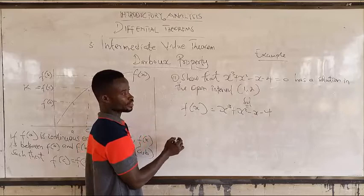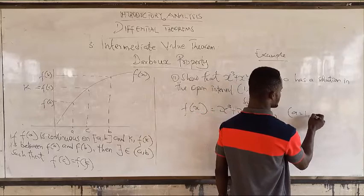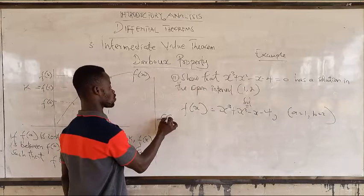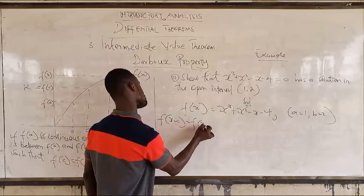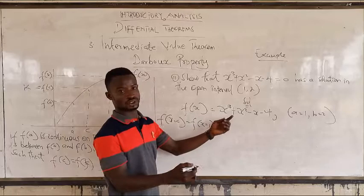The open interval gives us A equal to 1 and B equal to 2. We put the equation in terms of F(x). So F(x) evaluated at A, which means F(1), will give us a value. Let's do that substitution.